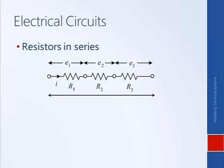Recalling what voltage is: the voltage across the first resistor is E1, across the second resistor is E2, and across the third resistor is E3. The current through all three resistors is the same, because the electrons have only a single path to go through.